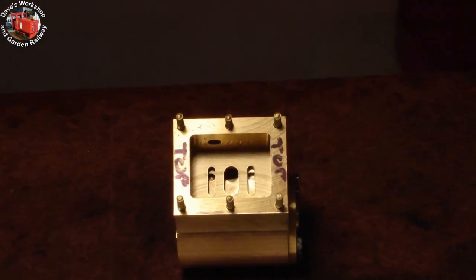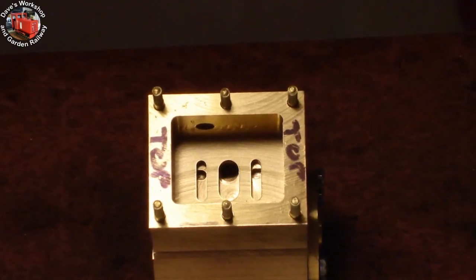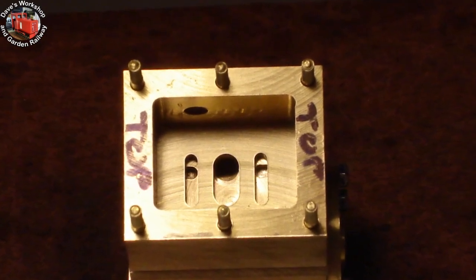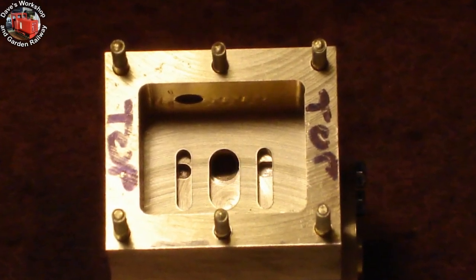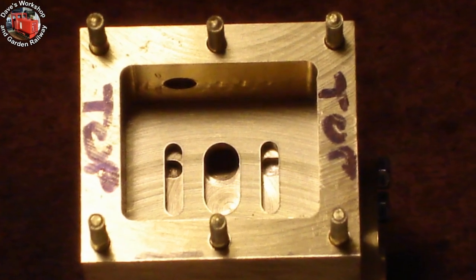Here's the port plate in position. You can see the cylinder ports underneath. I want the loco to run slowly, so I'm keeping those ports small. The ports in the plate are 3/16ths for the exhaust and 3/32nds for the steam, and 3/8ths wide.